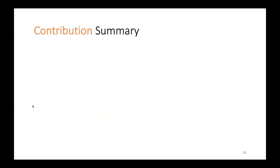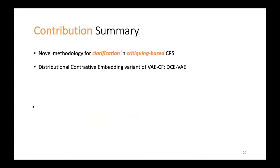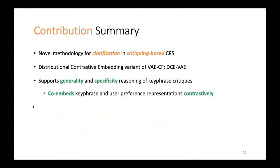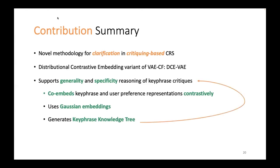To summarize the contributions before the experiment section: we proposed a novel methodology for clarification in critiquing-based conversational recommender systems. This involves a distributional contrastive embedding variant of the VAE-CF model, which we term DCVAE. This model supports reasoning about generality and specificity of keyphrase critiques by co-embedding keyphrase and user preference representations contrastively as Gaussian embeddings. These embeddings generate a keyphrase knowledge tree that determines generality and specificity in a given recommendation domain, and through co-embedding, it produces personalized clarification suggestions based on the user's historical preferences.